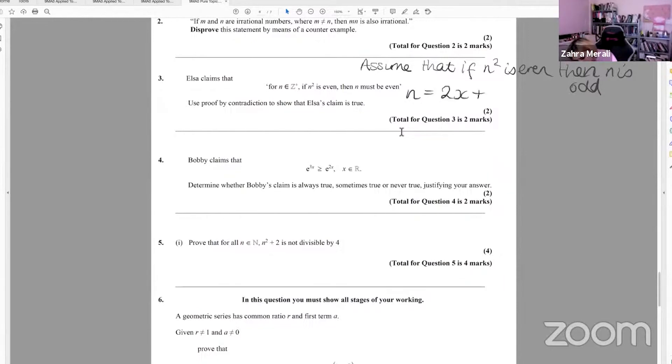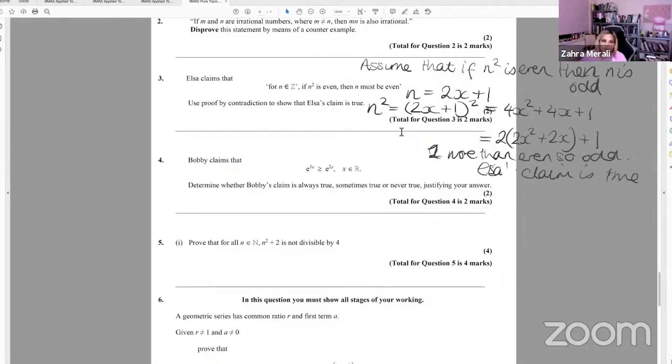2x plus 1, because remember, an odd number is always an even number plus one, you could do minus one. And then we're going to do n squared, which gives us 4x squared plus 4x plus 1. And we can take 2 outside the bracket, 2x squared plus 2x plus 1. This is two, one more than even, so odd. And then so Elsa's claim. Elsa's claim is true. Or by proof by, if it was more by proof by contradiction, Elsa's claim is true. Okay.